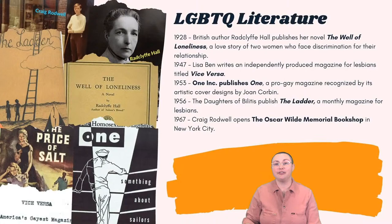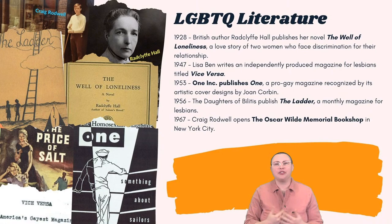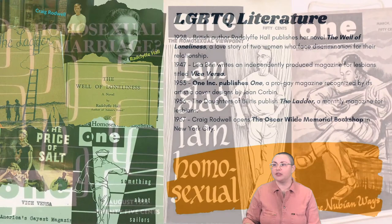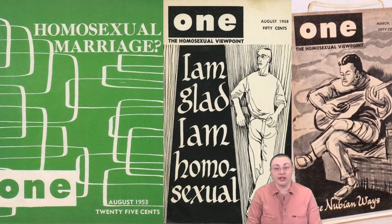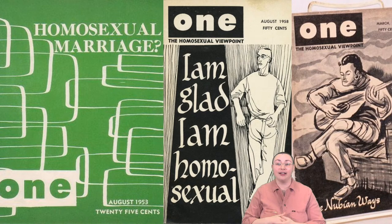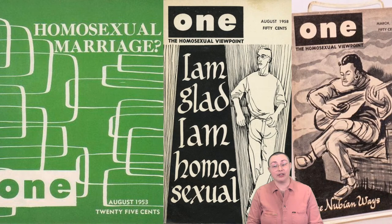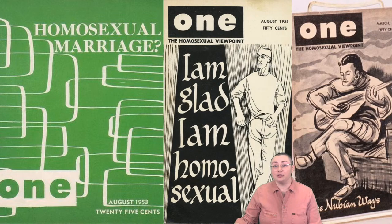Coming back to One Inc. magazine — in 1953, the artwork of One Magazine offered queer people visibility; to see themselves on a magazine was very unusual. They published articles, short stories, poetry, and letters to the editor — it was almost like a social platform for its time. To see something on a magazine that says 'I am glad I am homosexual,' or to see homosexual marriage called into question in 1953, is pretty fascinating. And of course there were also depictions of someone enjoying music and the arts. It was a really wide-ranging magazine.